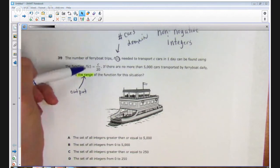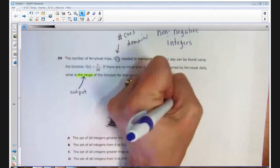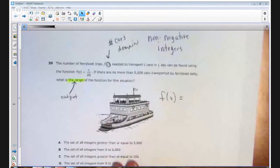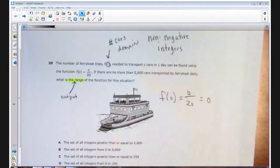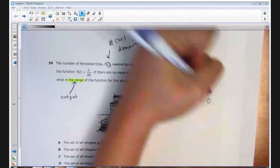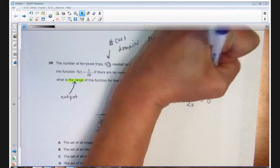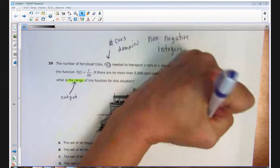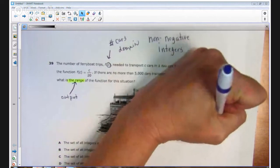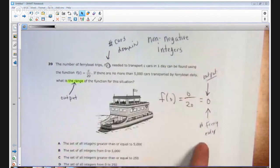So if I had zero cars put into this function, F of zero will equal zero divided by 20, which is zero. So the output for zero cars is zero ferry rides, or trips. I guess they called it trips. All right, so I know that my lowest value in my range is zero.